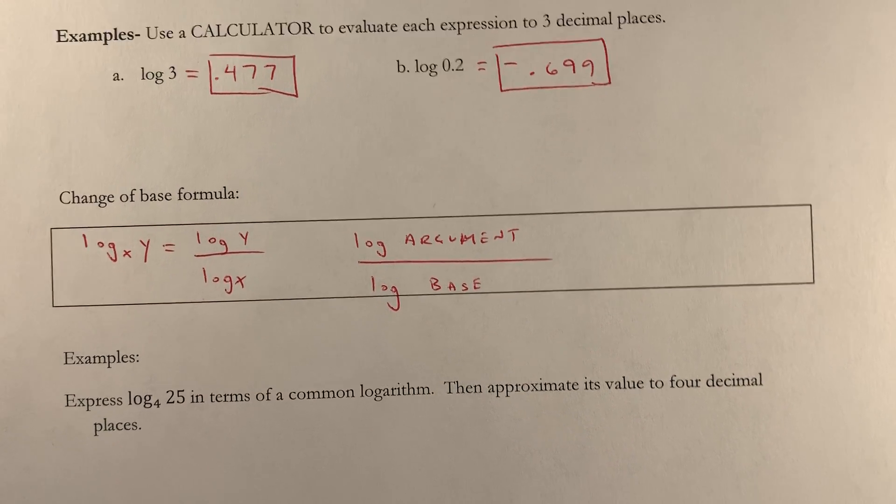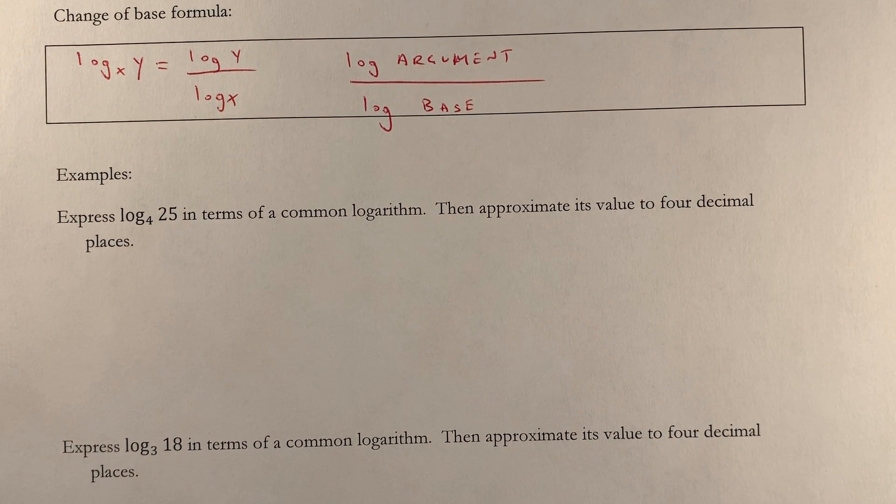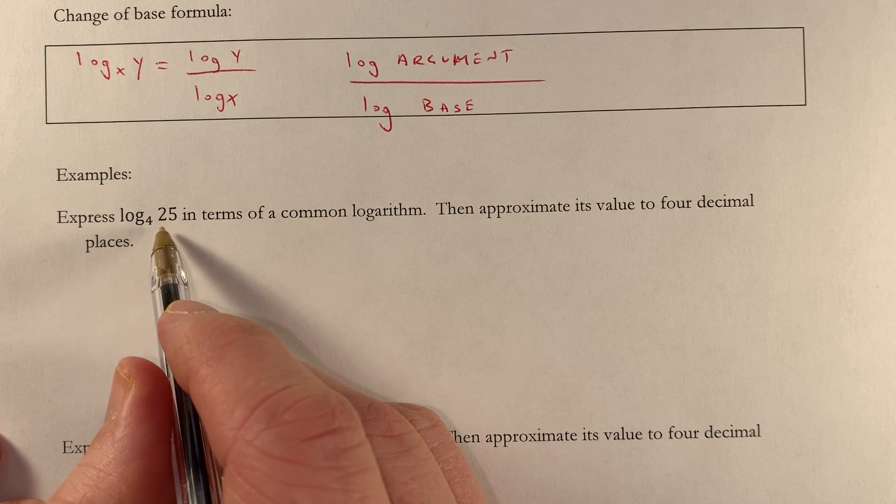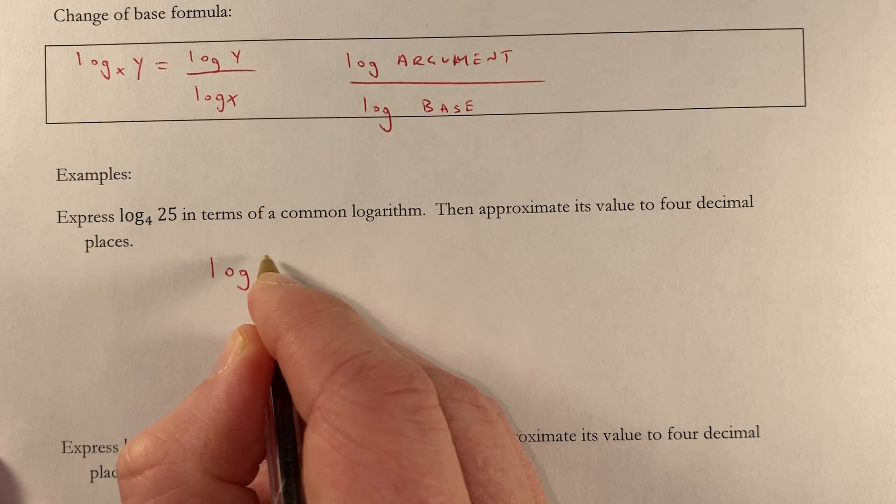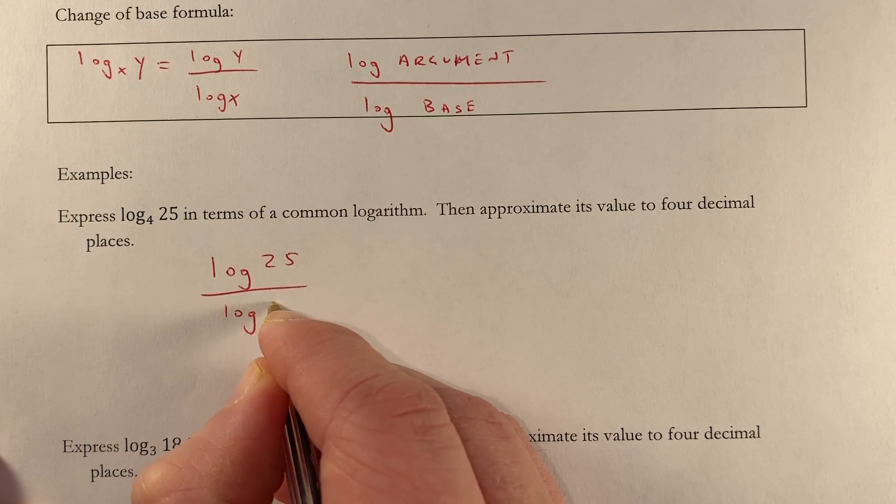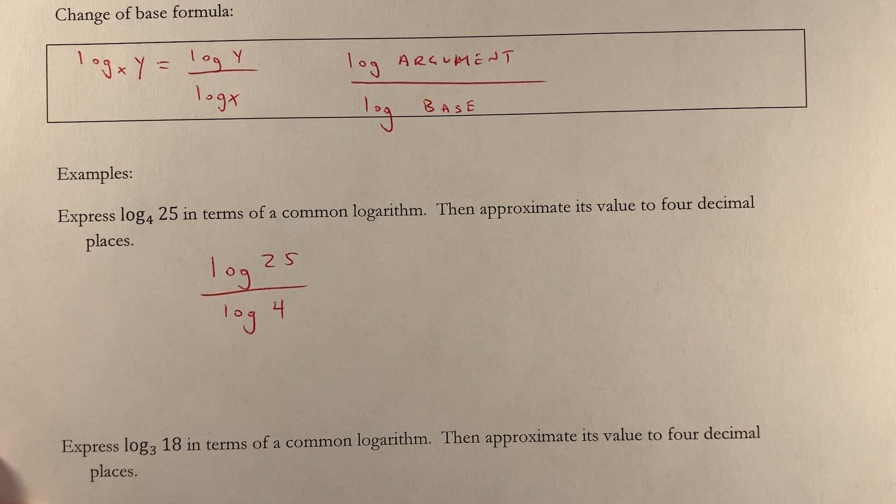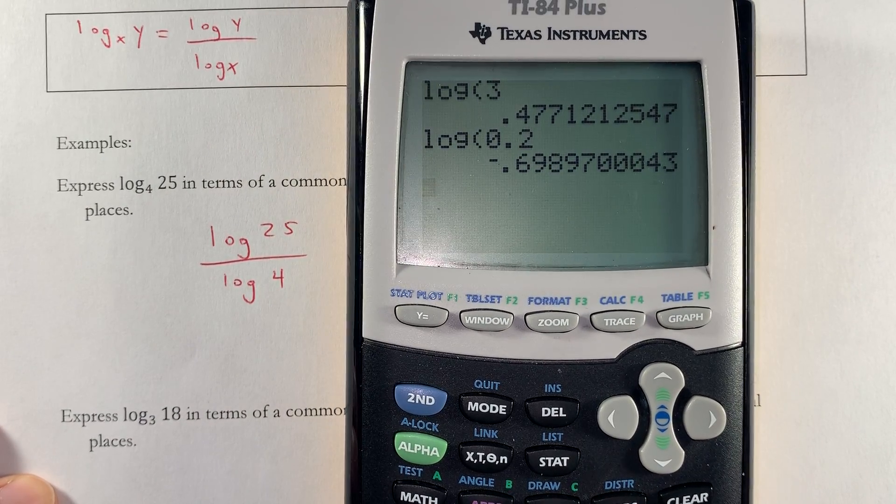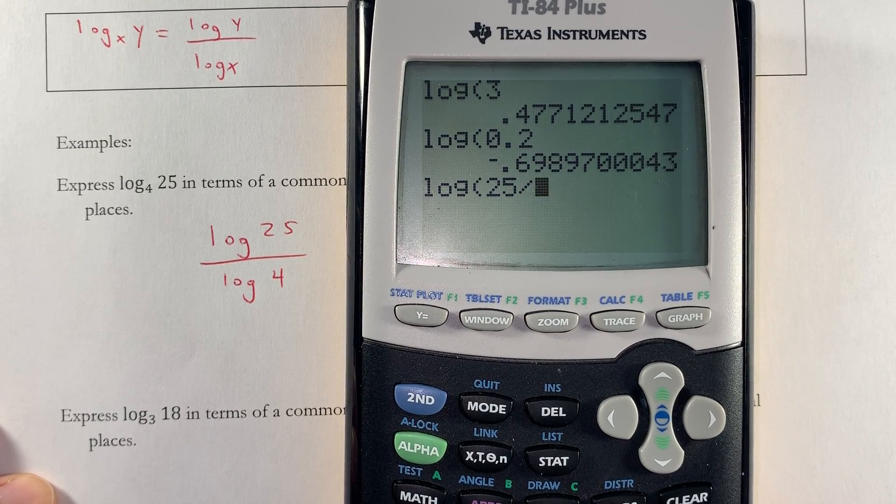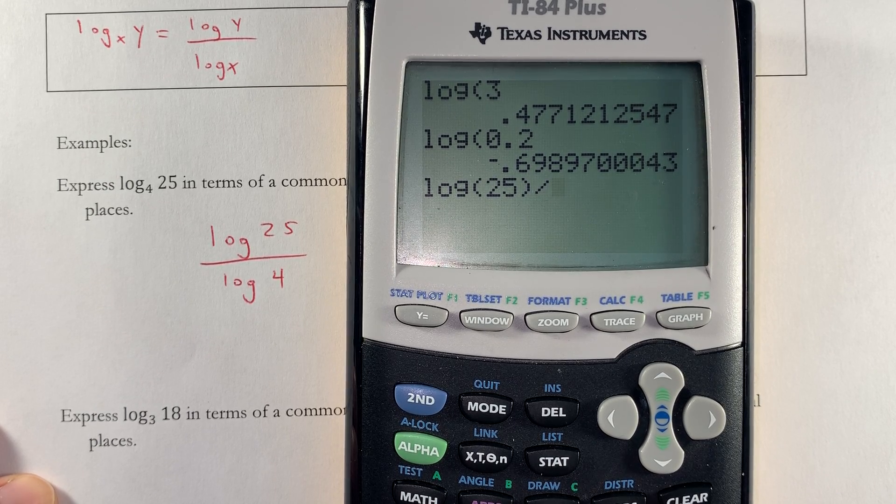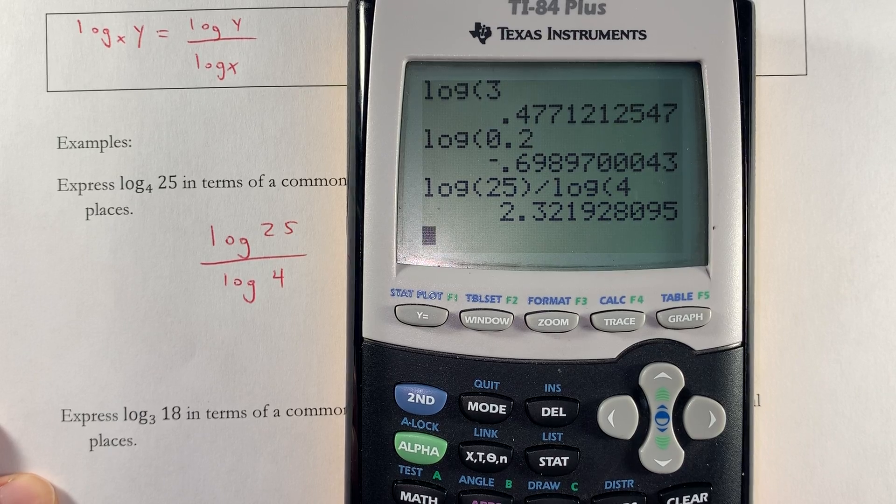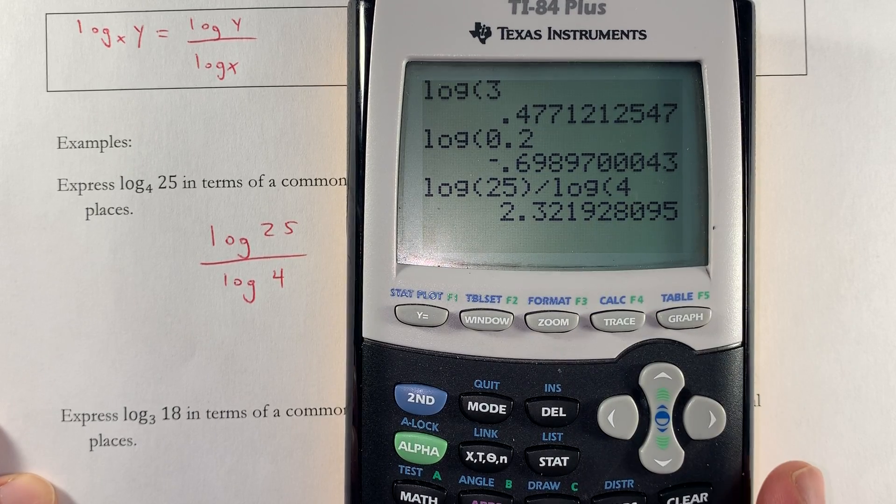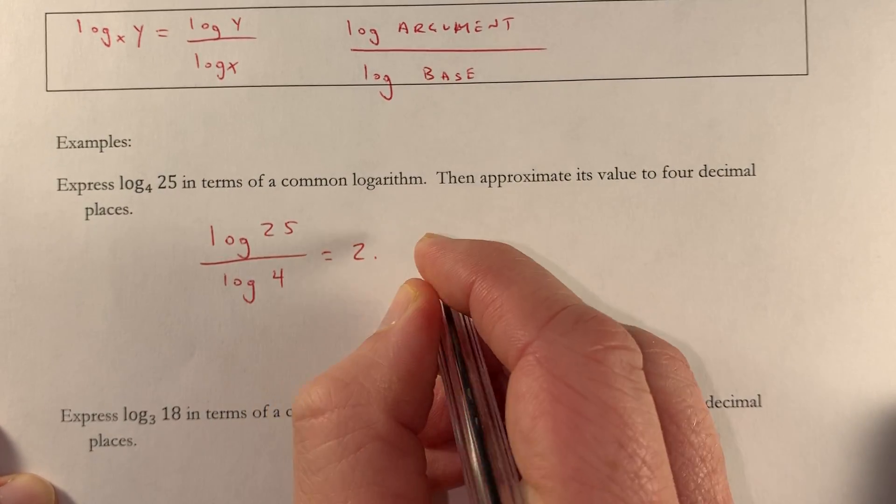Our first example: express log base 4 of 25 in terms of a common logarithm. In terms of a common log, that means we're going to change the base to a base 10, and that would be log of the argument divided by log of the base, log 25 divided by log 4. Then it says approximate the value to 4 decimal places. So we're going to do log 25 divided by, I need to close those parentheses first, divided by log 4. That's 2.3219. It says keep 4 decimal places. The fifth one is 2, not big enough to bump that up. So it's 2.3219.